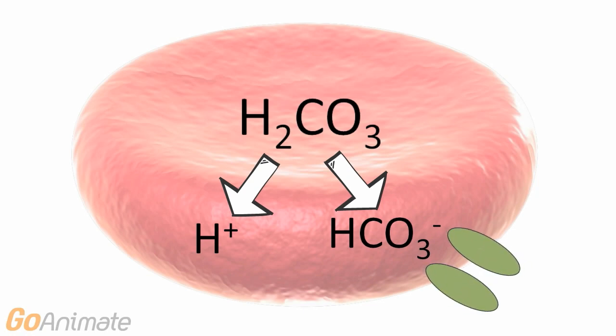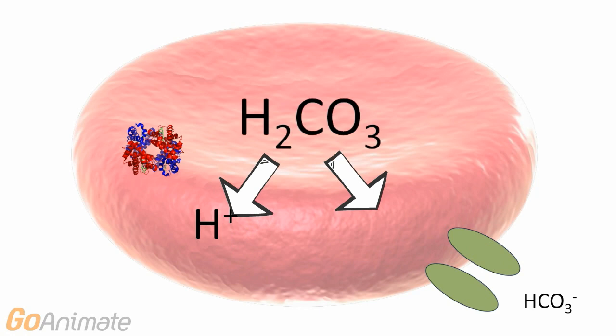The bicarbonate ion moves out of the red blood cell through a protein channel. The hydrogen ion binds to hemoglobin, triggering the Bohr effect. The bicarbonate ion channel also co-transports chloride into the red blood cell. This is called the chloride shift.